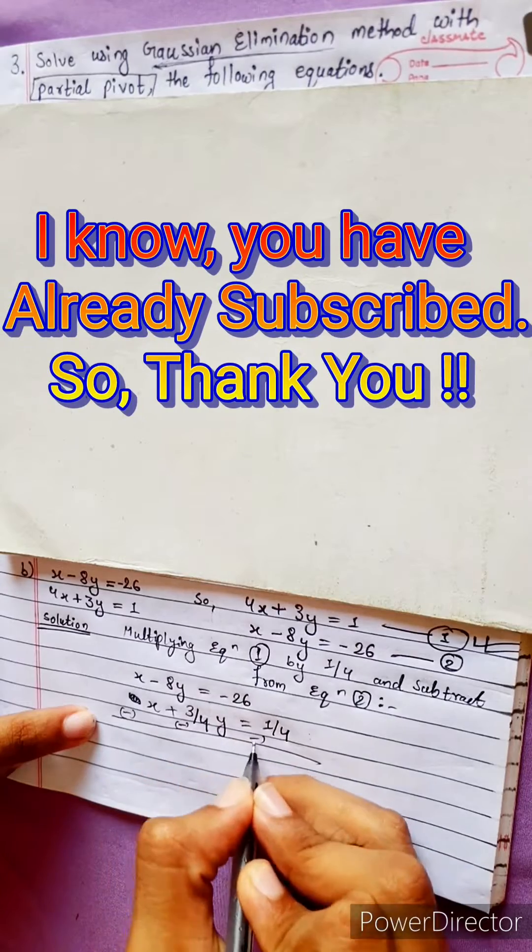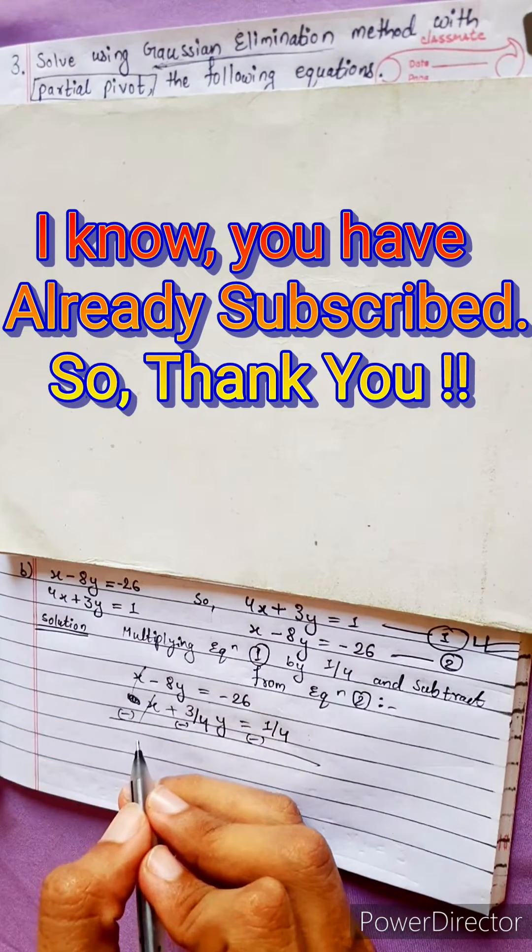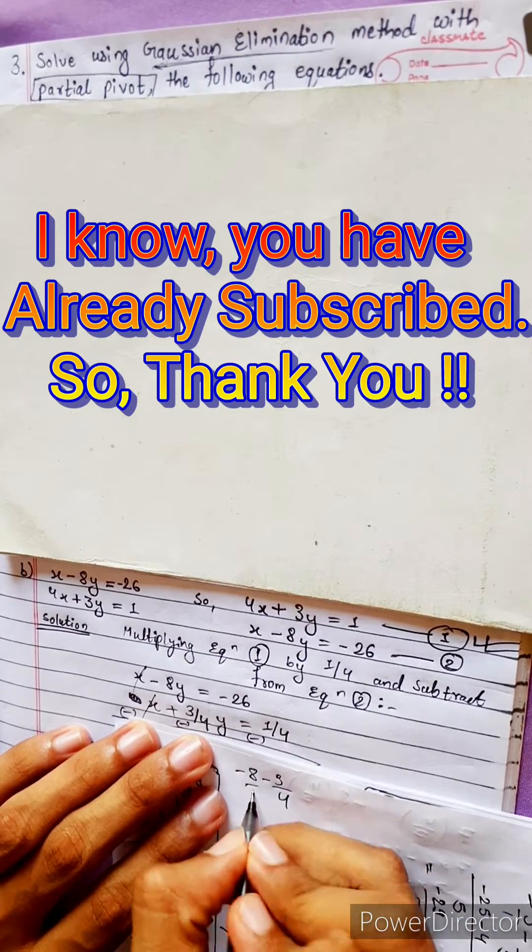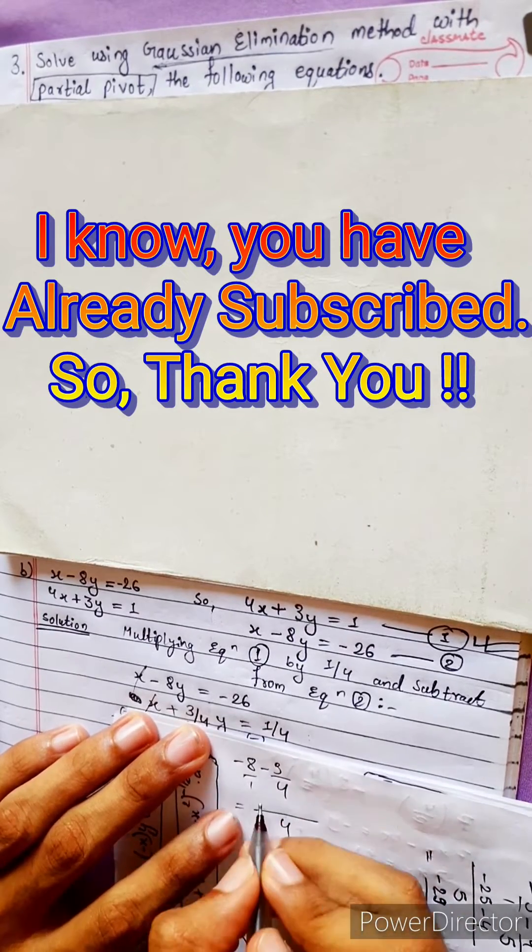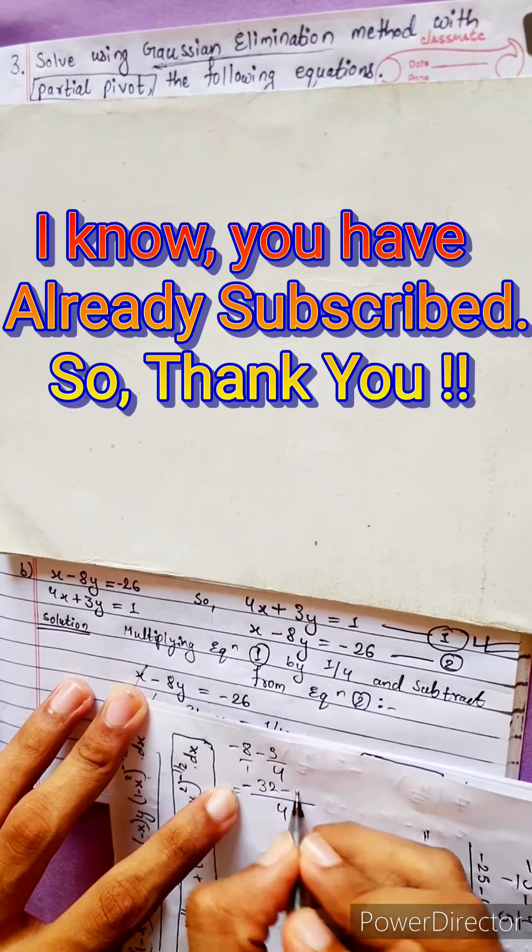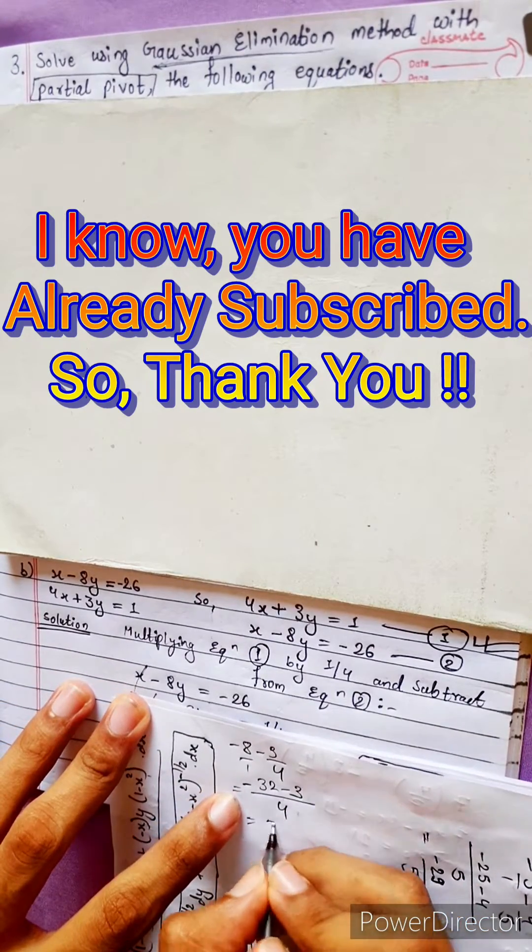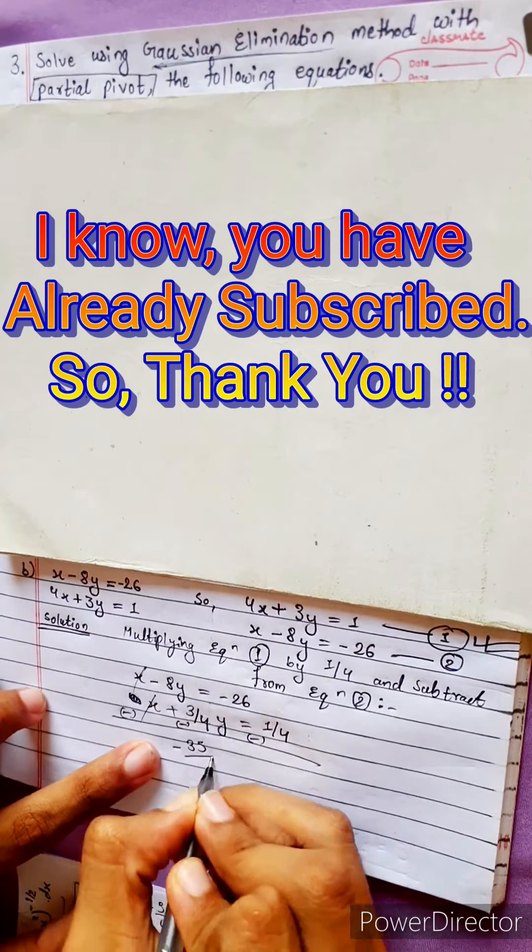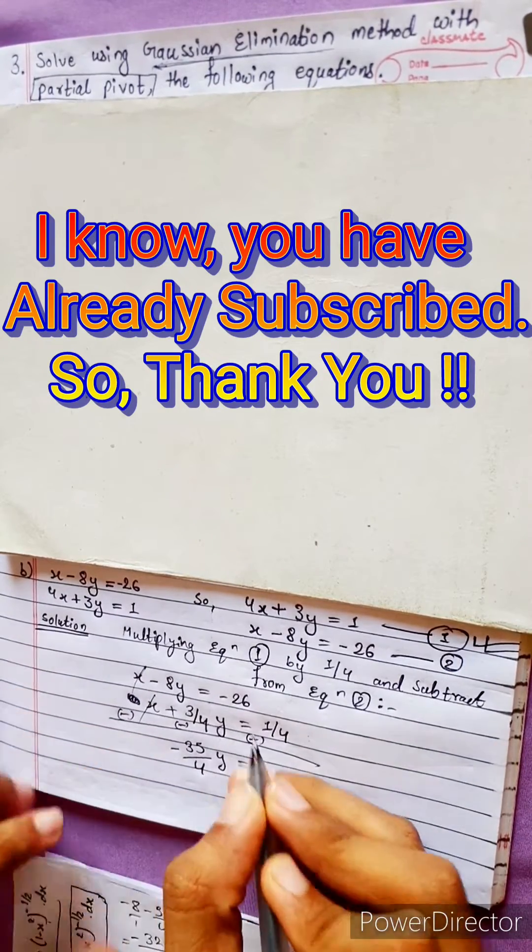Now subtract. Minus, minus, cancel. Minus 8 minus 3 by 4. This will be 4 LCM. 8 times 4 is 32. So minus 32 minus 3, minus 35 by 4. Minus 35 by 4 y equals to.